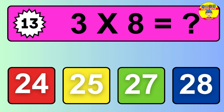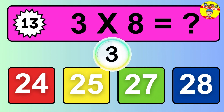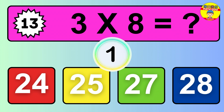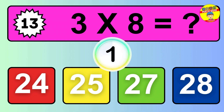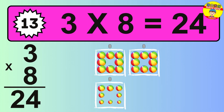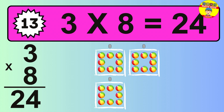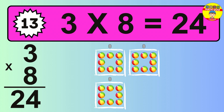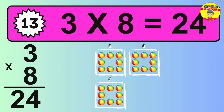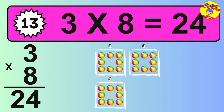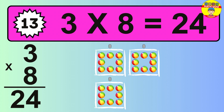Question 13. 3 times 8 equals what? The answer is 3 times 8 is 24. To calculate, we have 3 groups with 8 balls each one. So, how many balls do we have? 24 balls.